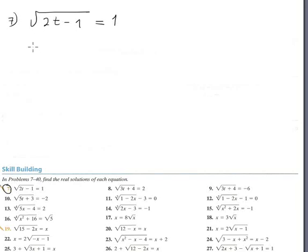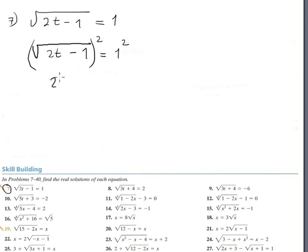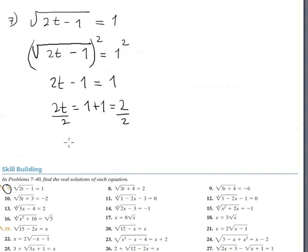Okay, radical equation, this is number seven. The key idea is squaring both sides to eliminate the radical. So square root of 2t minus 1 equals 1; squaring gives 2t minus 1 equals 1, so 2t equals 2, and dividing both sides by 2, t equals 1. This is the solution.